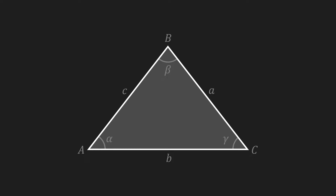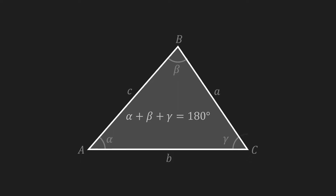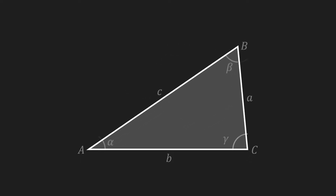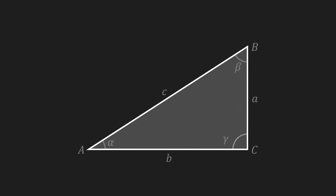The sum of the angles of a triangle is always equal to 180 degrees. For the majority of this video we won't discuss generic triangles like this one; instead we'll cover right-angled triangles.